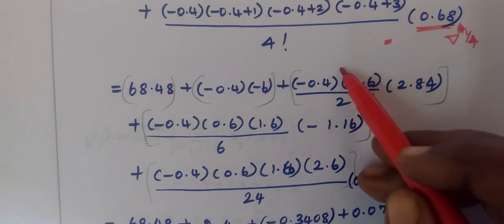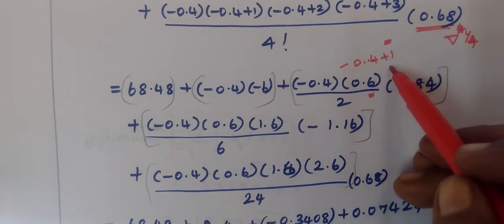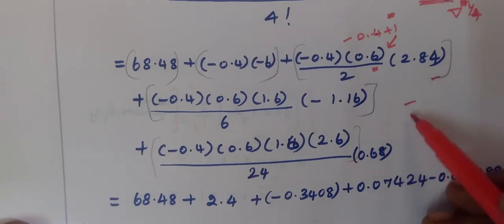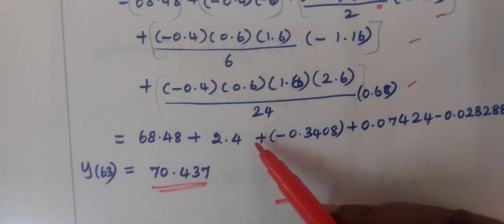In this previous step, minus 0.4 plus 1 gives the answer 0.6. Put these values in the calculator.